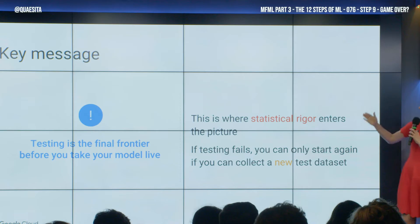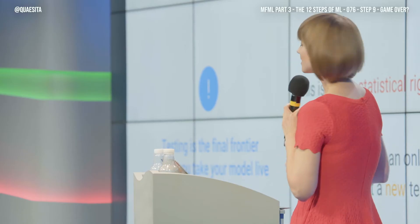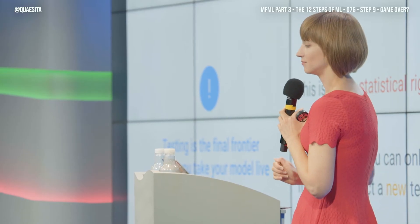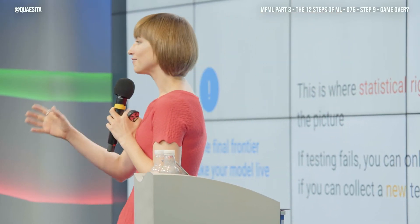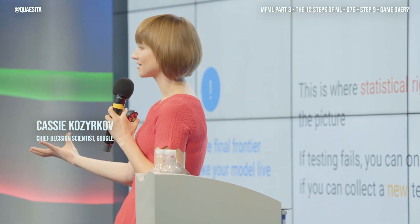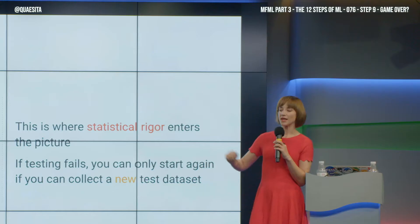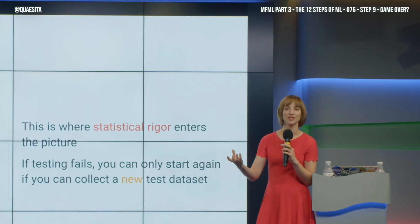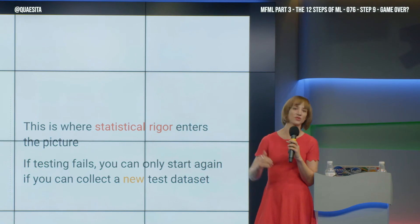Key message: testing is the final frontier before you take your model live. If testing fails, you can only try again if you have the ability to collect a dataset that is a legitimate testing dataset — that means a pristine dataset. If you have data constantly streaming in, you're in that lucky situation where you can always go try again. Everything is a dress rehearsal for what happens next.